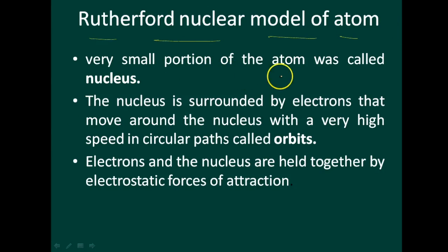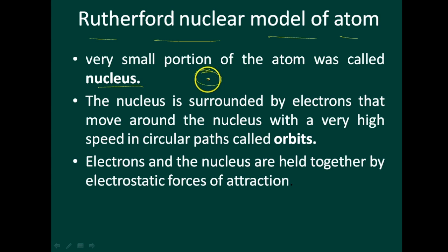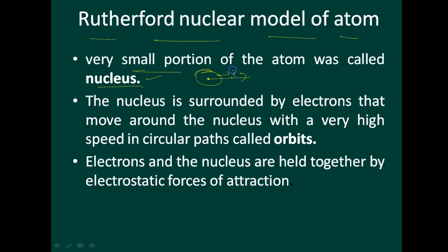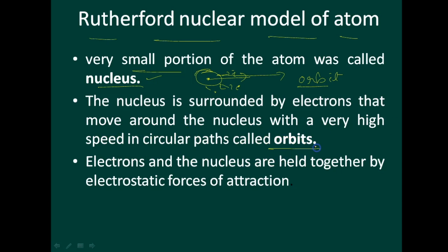A very small portion of the atom is called the nucleus. The nucleus is surrounded by electrons. Consider this as an orbit — electrons are revolving in it. The nucleus is surrounded by electrons that move around the nucleus with very high speed in a circular path called an orbit. The path where electrons are revolving around the nucleus is called the orbit.